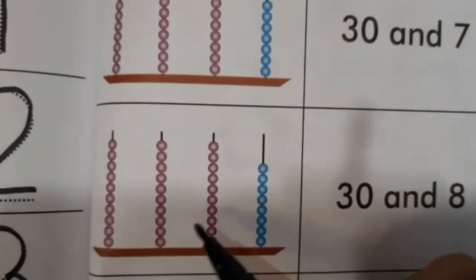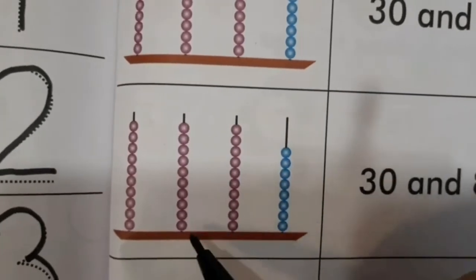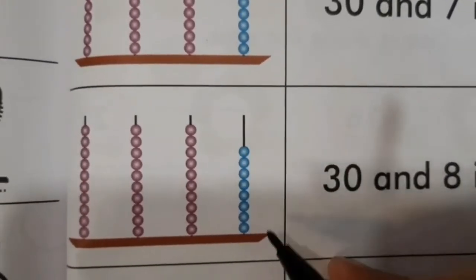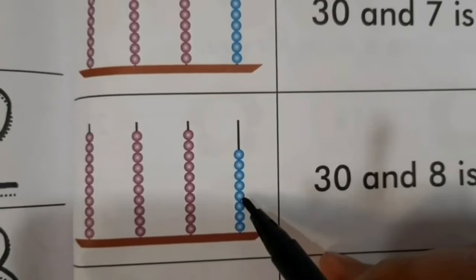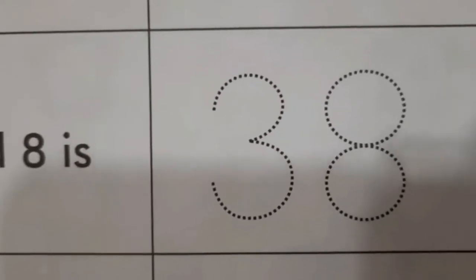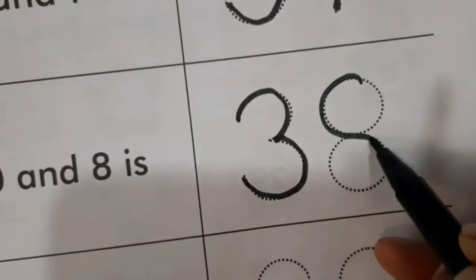Similarly, we have 10 beads in the first line, 10 beads in the second line, again 10 beads in the third line. And 4th line में कितने हैं? 1, 2, 3, 4, 5, 6, 7 and 8. So, children, we have 3, 0 — 30 and 8, which is equal to 3, 8 — 38. So, let's trace this number: 3, 8, 38.